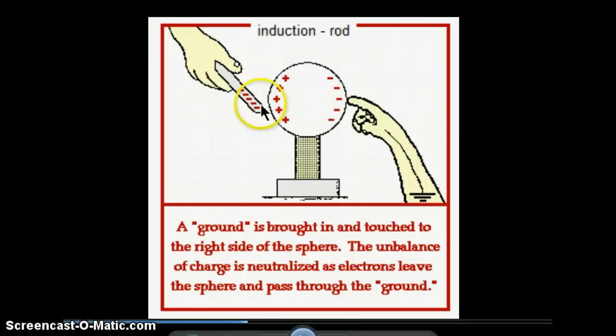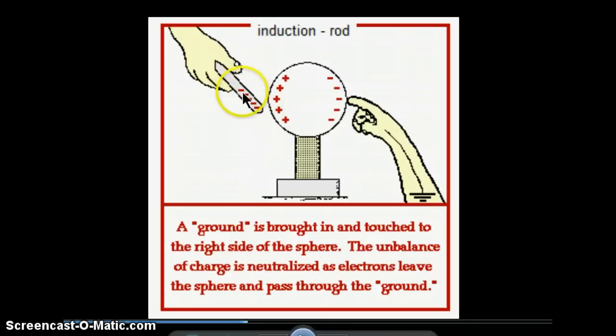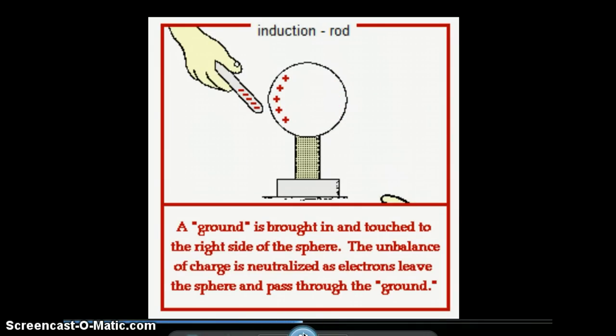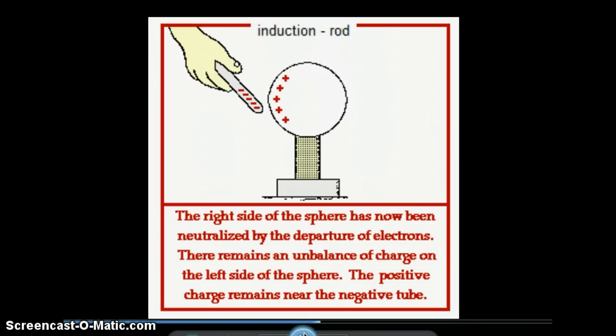In this case, since we have a negative rod over here, these electrons are going to be pushed, like repel. They're going to want to get away from those negative charges. So they're going to go down the hand toward the ground, and once we take the ground away, you'll see that we're left with a net positive charge on the sphere.